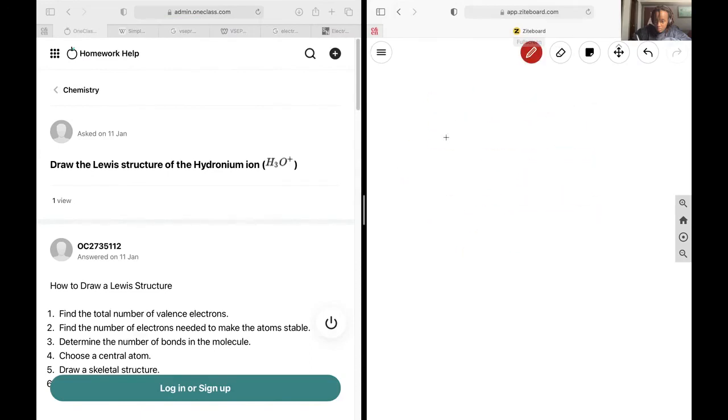Next up, I'd like the Lewis structure for the hydronium ion. So my valence electrons, as usual, is going to be 3 plus 6 minus 1, but I'd like to label where all of that comes from.